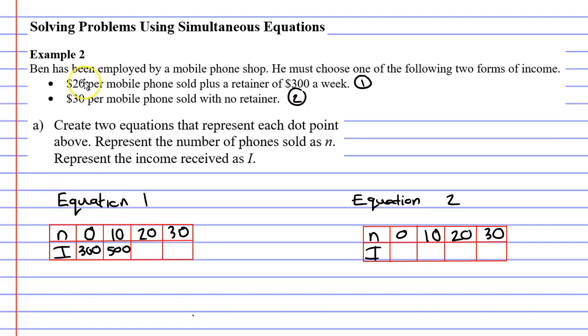If he sells 20 phones at $20 per phone, that's $400. Plus the retainer of $300 makes an income of $700. The next one's going to be $900. And I know that because I can see a pattern. The numbers are going up by $200 each time.